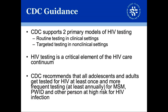CDC supports two primary models for HIV testing. Routine testing in clinical settings — the typical blood draw you may receive at a healthcare provider, either a primary care, urgent care, or emergency department or hospital inpatient visit. The CDC also supports targeted testing in non-clinical settings, which is where rapid testing comes into play. HIV testing is a critical element of something called the HIV care continuum — a map or graph that depicts individuals along a spectrum from at risk of HIV to being diagnosed with HIV, being engaged in care with an HIV medical provider, being on medication, and finally, being virally suppressed.